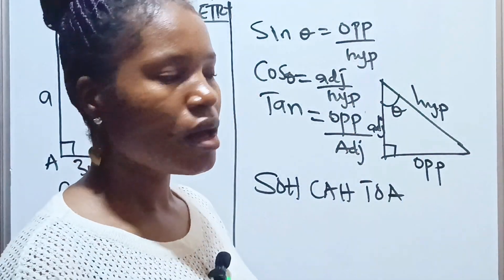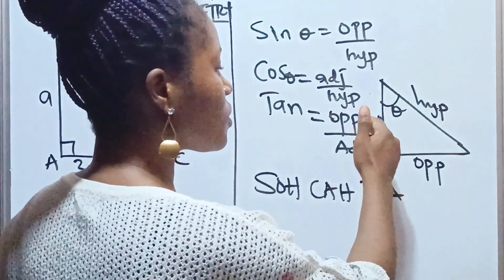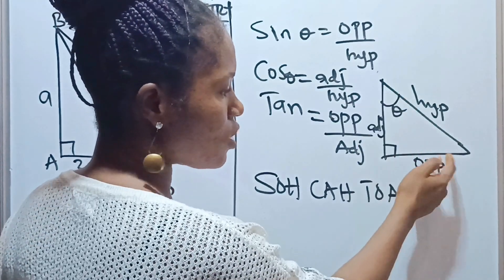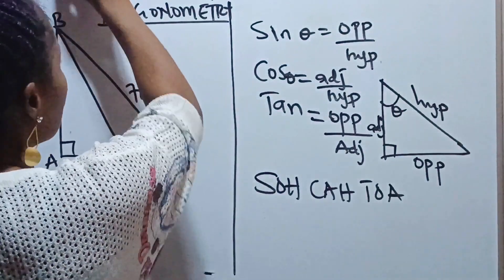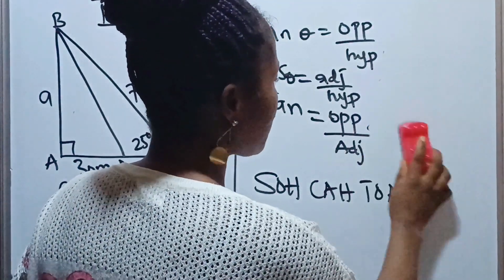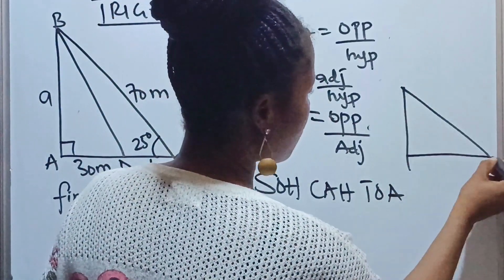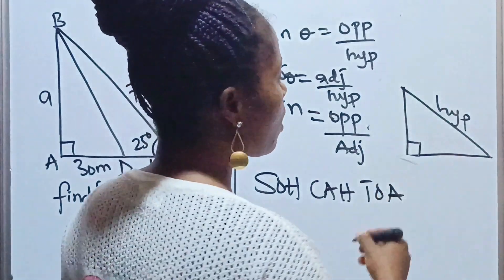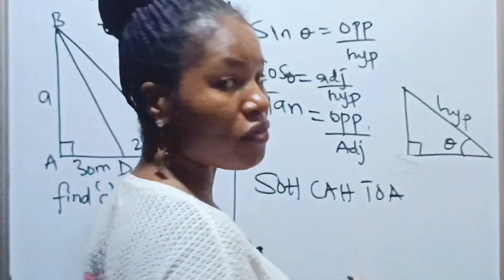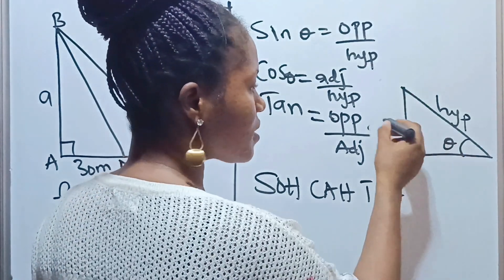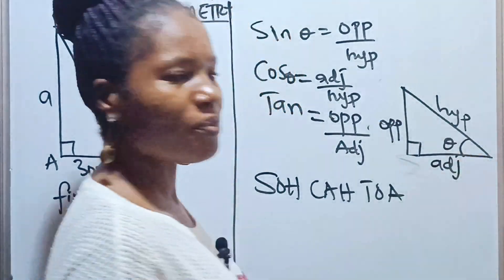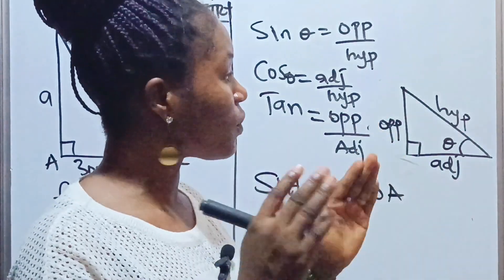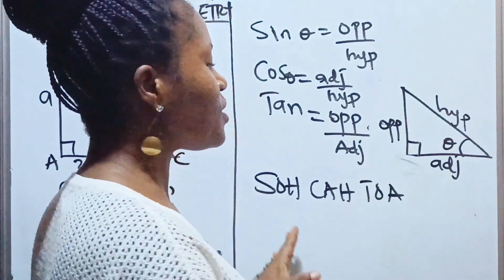Note that opposite and adjacent don't have a fixed position — their position changes with the position of the angle. Because this side is facing our angle here, this side is the opposite and this side is the adjacent. If I change the position of the reference angle, the opposite and adjacent also change. Your hypotenuse always remains the same as the side facing your right angle.